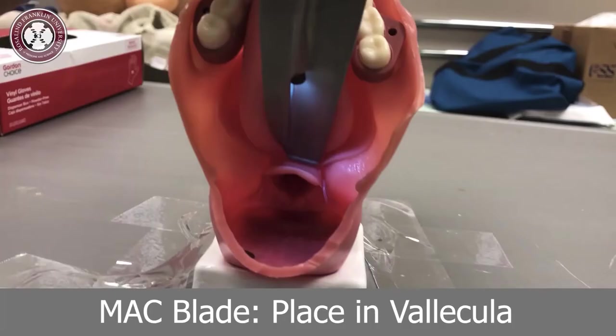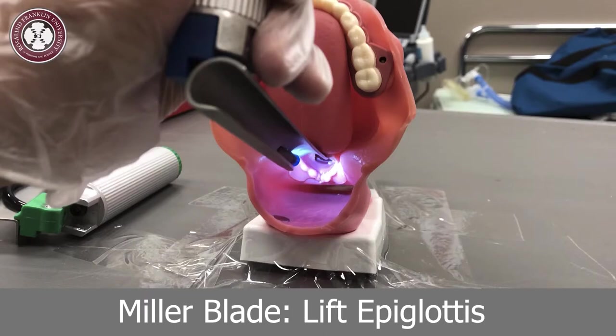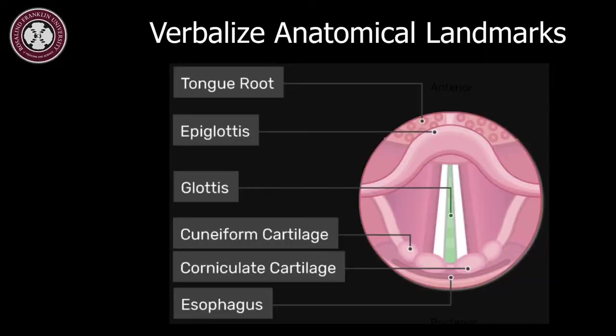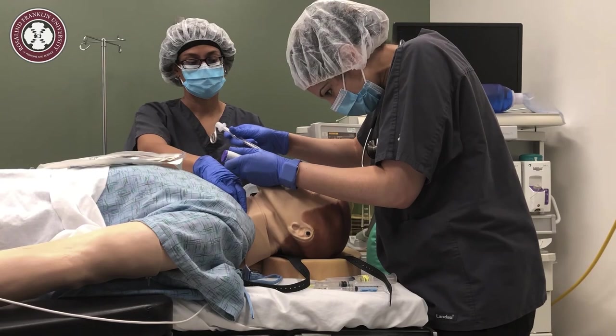If a MAC blade is used, the blade tip will be positioned in the vallecula to indirectly lift the epiglottis. A Miller blade will go beneath the epiglottis and directly lift it. Both blades displace the epiglottis. Once lifted, the glottic opening should be revealed. Look for additional anatomical landmarks and be sure to verbalize them to your preceptor. With the glottic opening identified, carefully place the ET tube and visualize its insertion through the vocal cords.